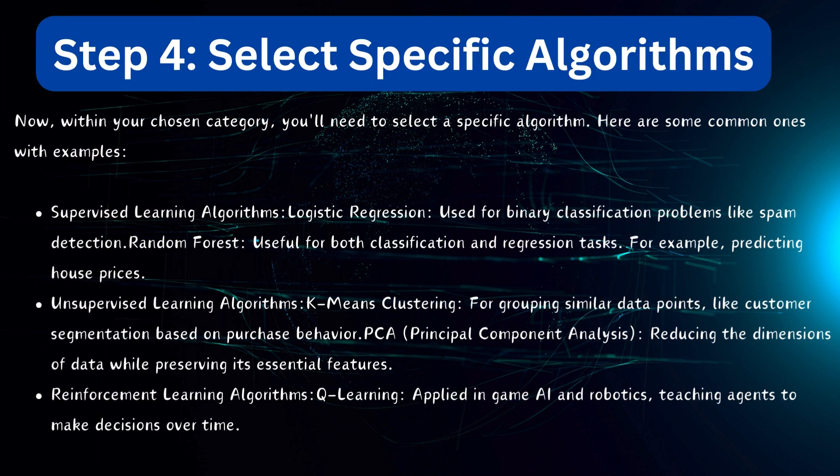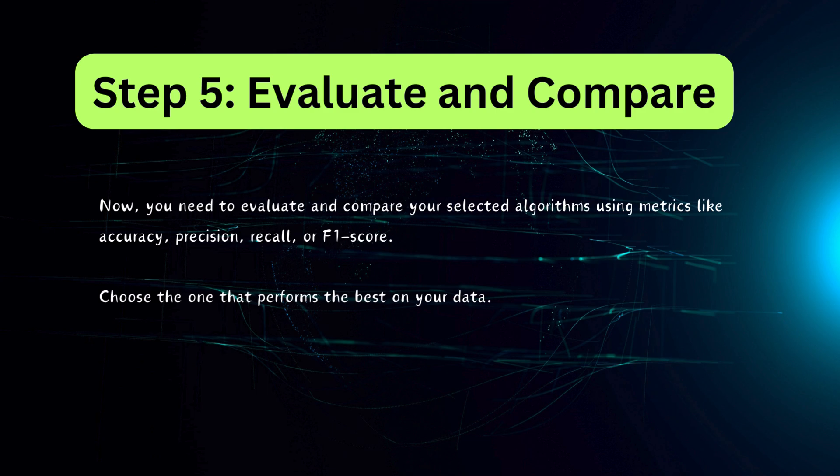Step four: select specific algorithms. Now within your chosen category you'll need to select a specific algorithm. Here are some common ones with examples. For supervised learning algorithms: logistic regression or random forest. For unsupervised learning algorithms: k-means clustering or PCA could be applicable. Similarly for reinforcement learning algorithms: Q-learning could be applicable.